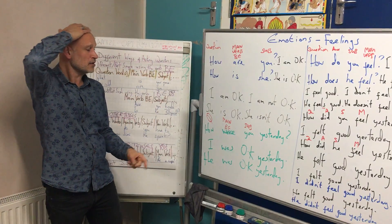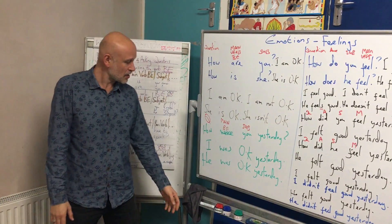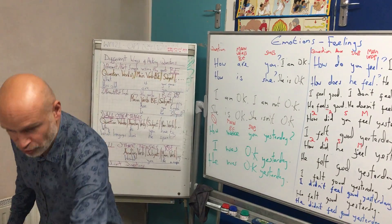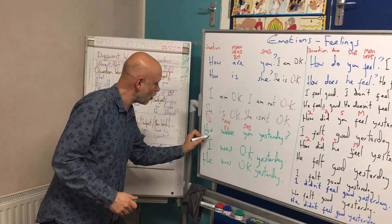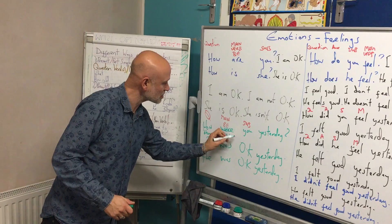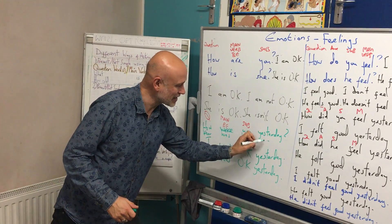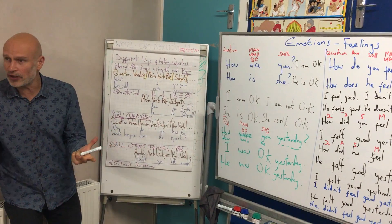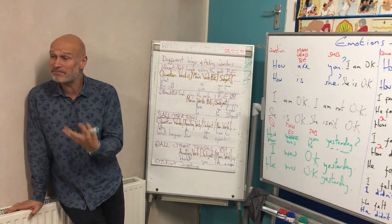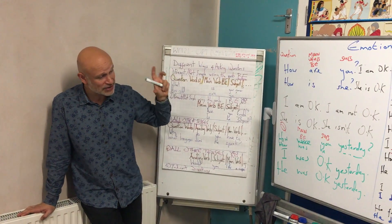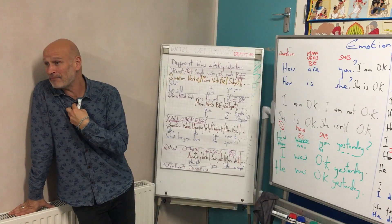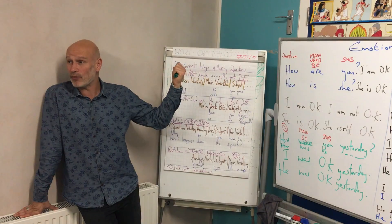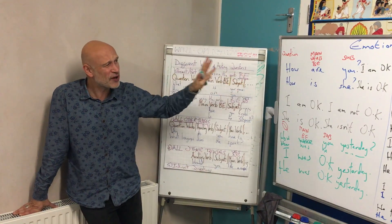I was okay yesterday. How was he yesterday? He was okay yesterday. The verb 'to be' — we can use it to talk about some basic things in the present simple and the past simple. I am Mike, I'm 51, I am not 49. Yesterday I was at my friend's house.